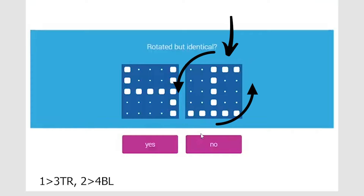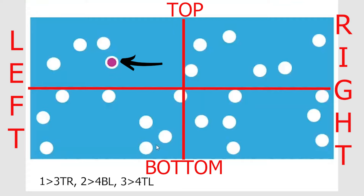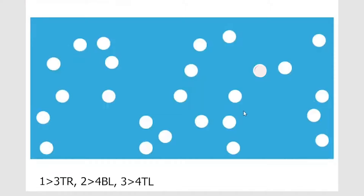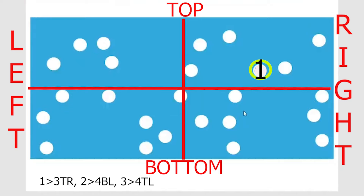Memory question: dot at third position, top right quadrant. Rotation question: taking the left image as base — it shows number 6. Rotating the right image 90° counterclockwise makes it a mirror image but not identical, so no. Another memory question: dot at fourth position, bottom left. Left image shows number 4; rotating the right image 90° anti-clockwise also gives number 4 — yes, identical. Memory: dot at fourth position, top left. Left image is number 6; rotating right image 90° clockwise also gives number 6 — yes, identical. Now place the dots.